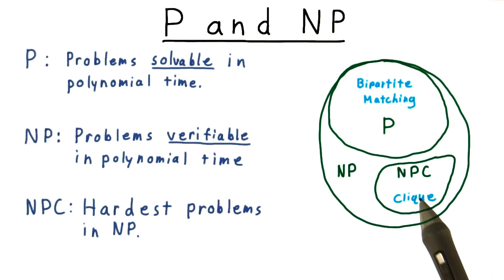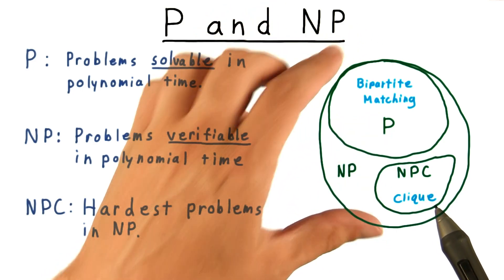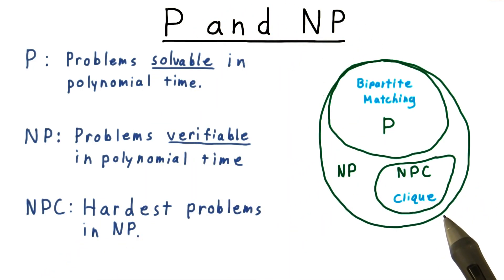Therefore, if someone were to come up with a polynomial algorithm for even one NP-complete problem, then P would expand out in this diagram, making P and NP into the same class. Finding a polynomial solution for clique would do this. So we say that clique is NP-complete.